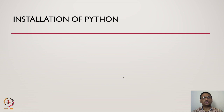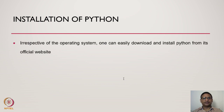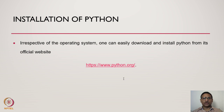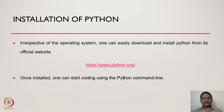Now let us see how we can start installing Python. One can install Python in any operating system by downloading from its official website python.org and installing it. Once you have installed Python, you can start coding using the Python command line.